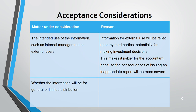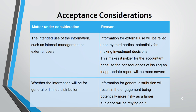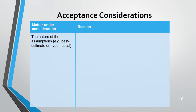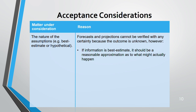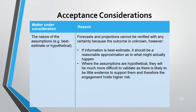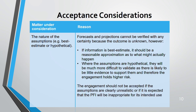Next, consider whether the information will be distributed generally or on a limited basis. General distribution is riskier because a larger audience will rely on it. Third, consider the nature of assumptions — best estimate or hypothetical. Forecast outcomes are very unknown, but if information is based on best estimates, you assess whether a reasonable approximation has been made. Hypothetical assumptions are more subjective with less supporting evidence, making them riskier.